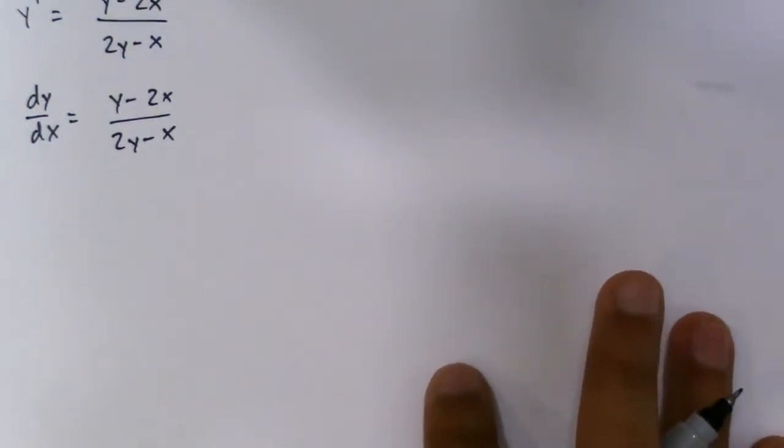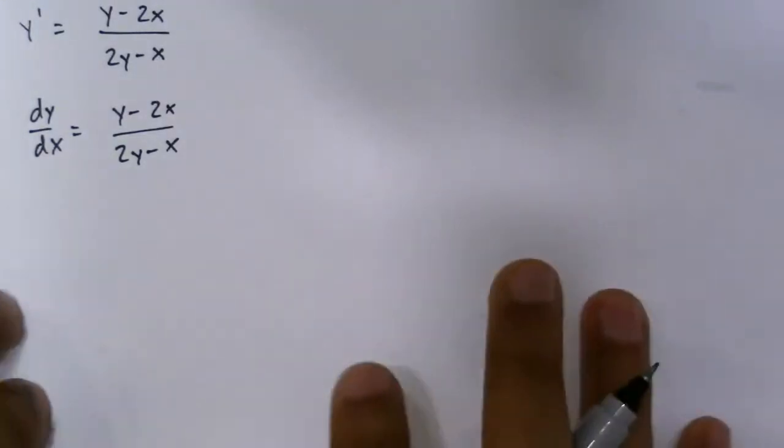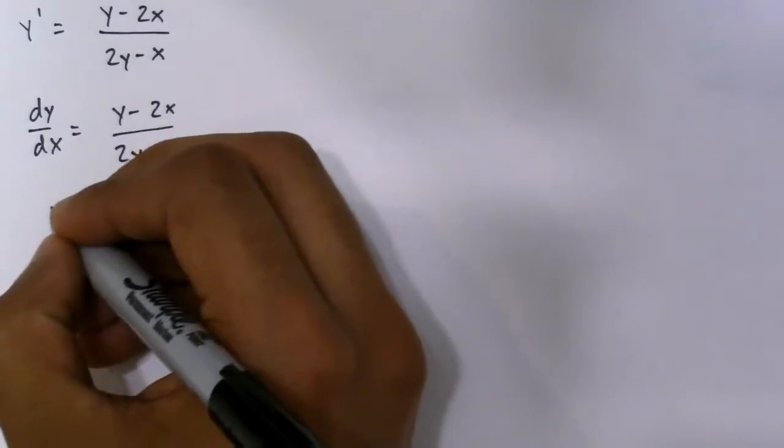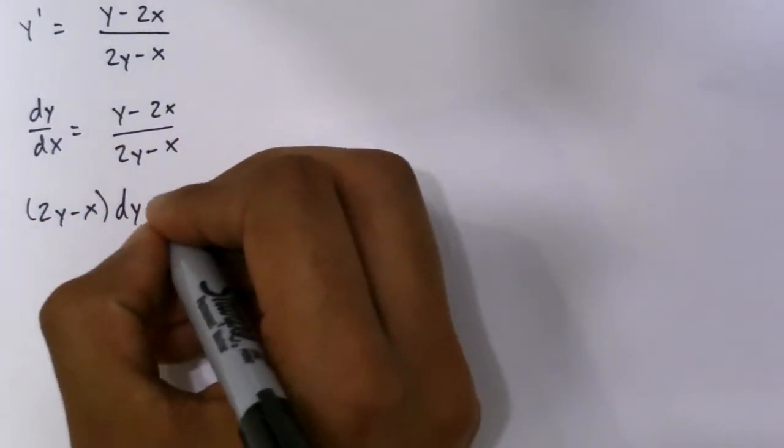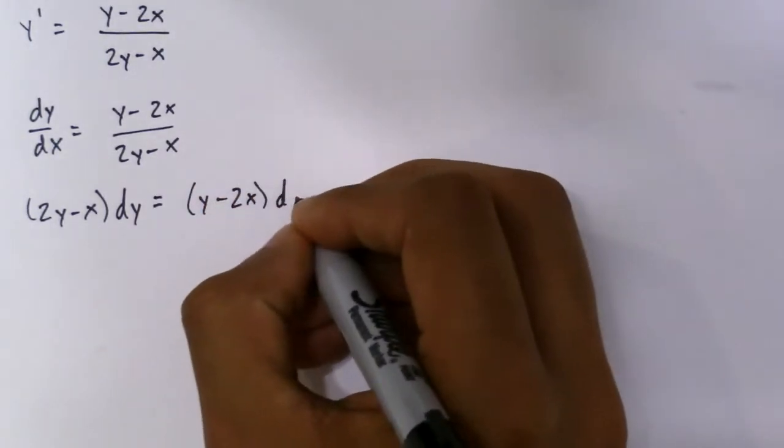So we could simplify that. Well, not simplify, but collect terms, not collect terms, but distribute. So we have (2y minus x) times dy, which equals (y minus 2x) dx.